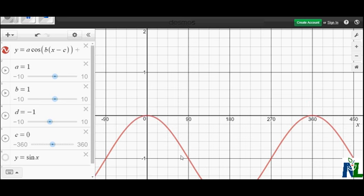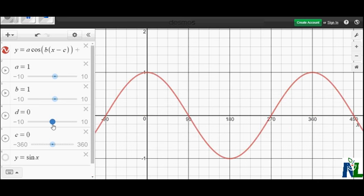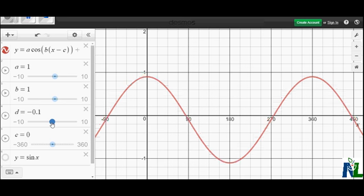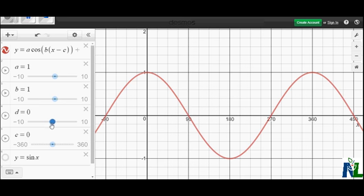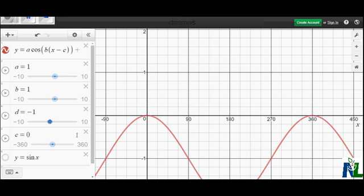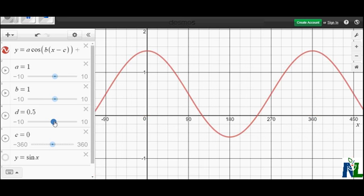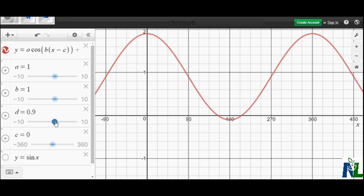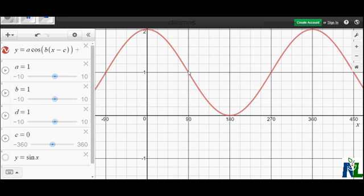For instance, if I make d negative 1, we'll see that the midline for the original is right here on the x-axis at 0. But if I make the d value negative 1, then now the midline is down here at negative 1. If I make d a positive 1, then the midline shifts up to positive 1, and so on.